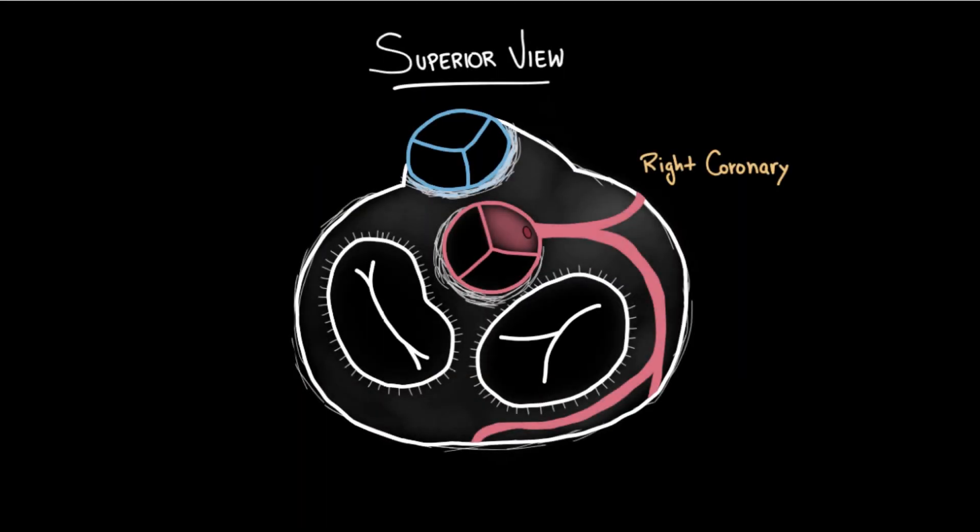Let's go back to the superior view of the heart to take a look at the left coronary artery. Here we have the left cusp of the aortic valve, and just superior to it, we see the opening of the left coronary. Then we see the left coronary passing behind the pulmonary trunk and going towards the coronary sulcus.